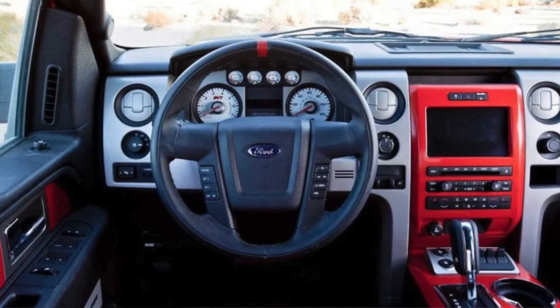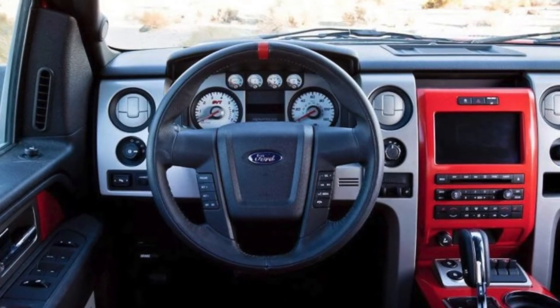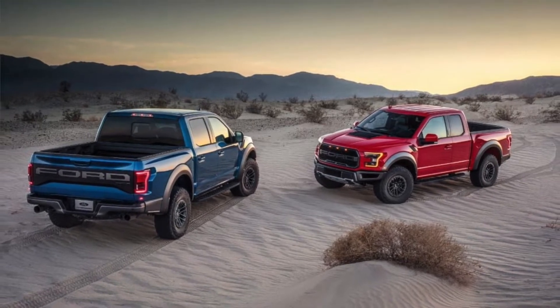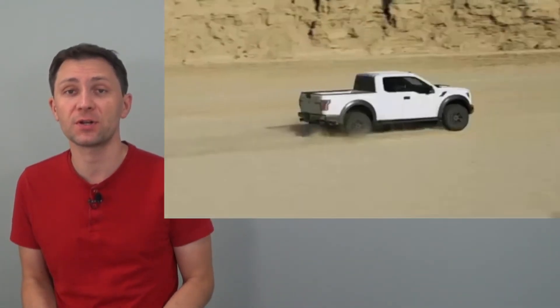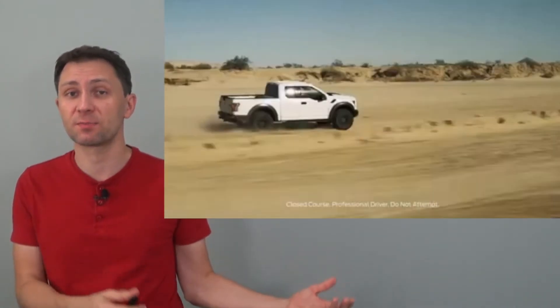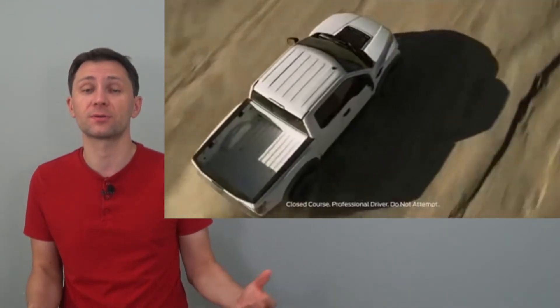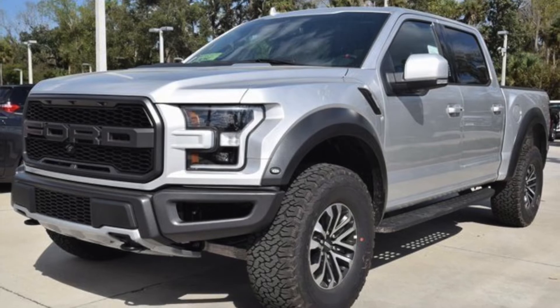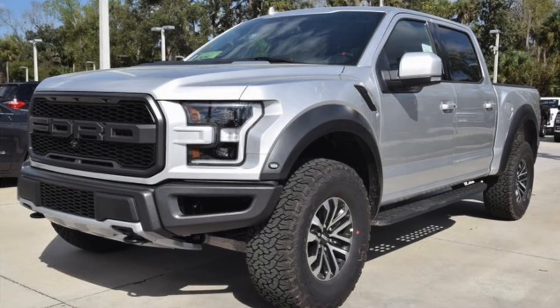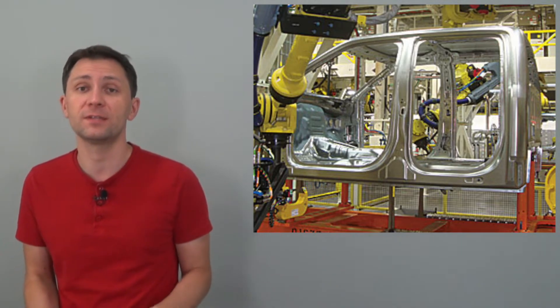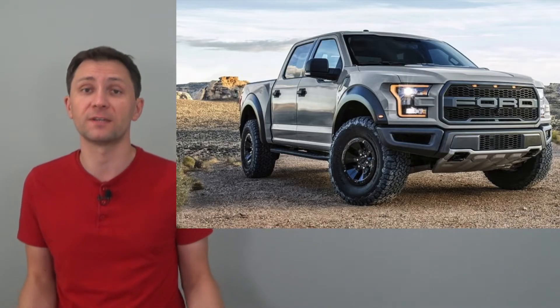The second-generation Raptor was released for the 2017 model year, dropping the SVT prefix. And just like its predecessor, the new Raptor is a pickup truck derived from F-150 and prepared for off-road adventures. And also just like the standard F-150, the Raptor is mostly an aluminum vehicle using steel for the frame rails only. And compared to the previous SVT Raptor, the weight was reduced by over 500 pounds.